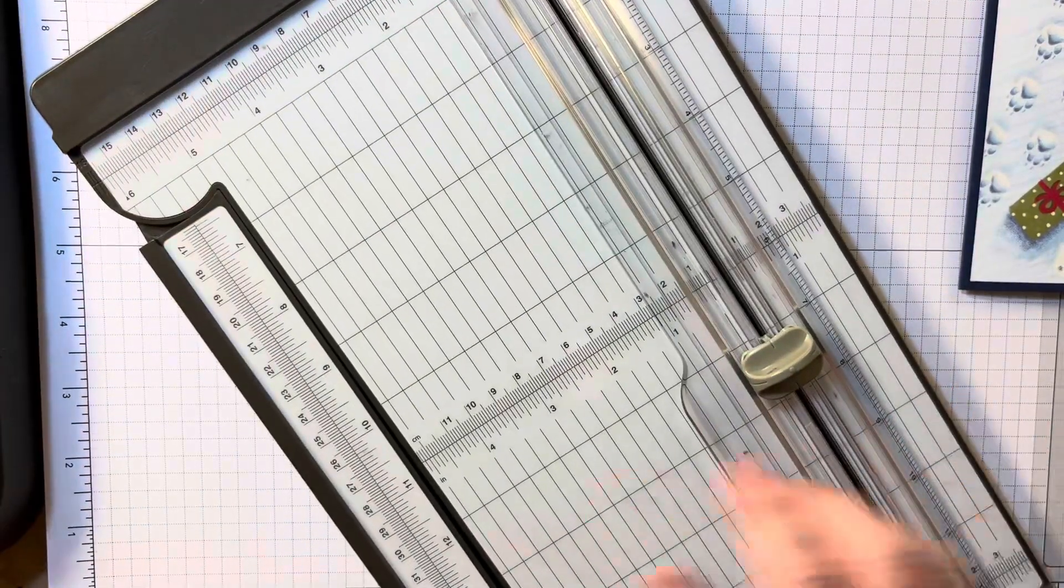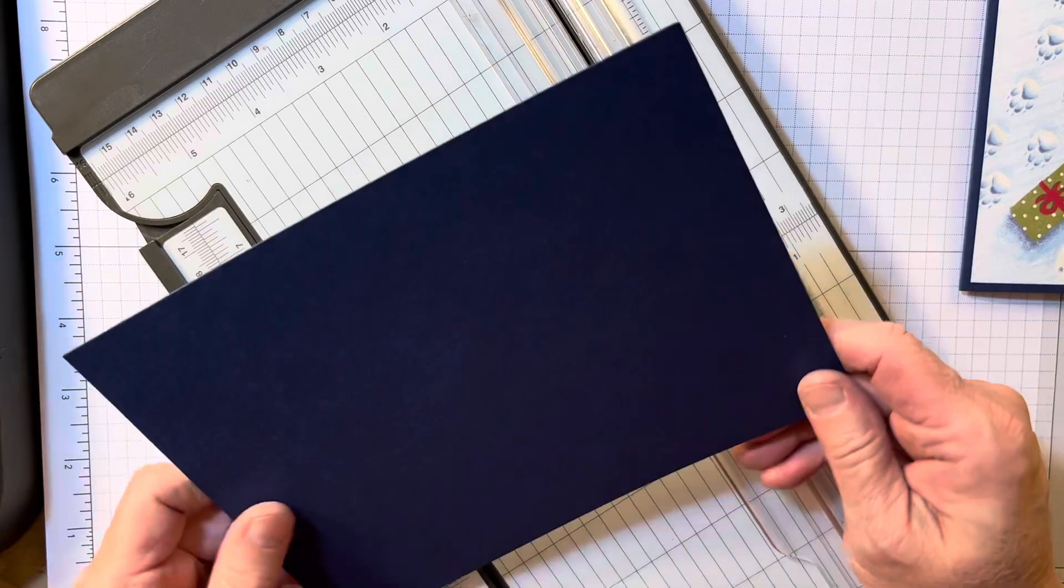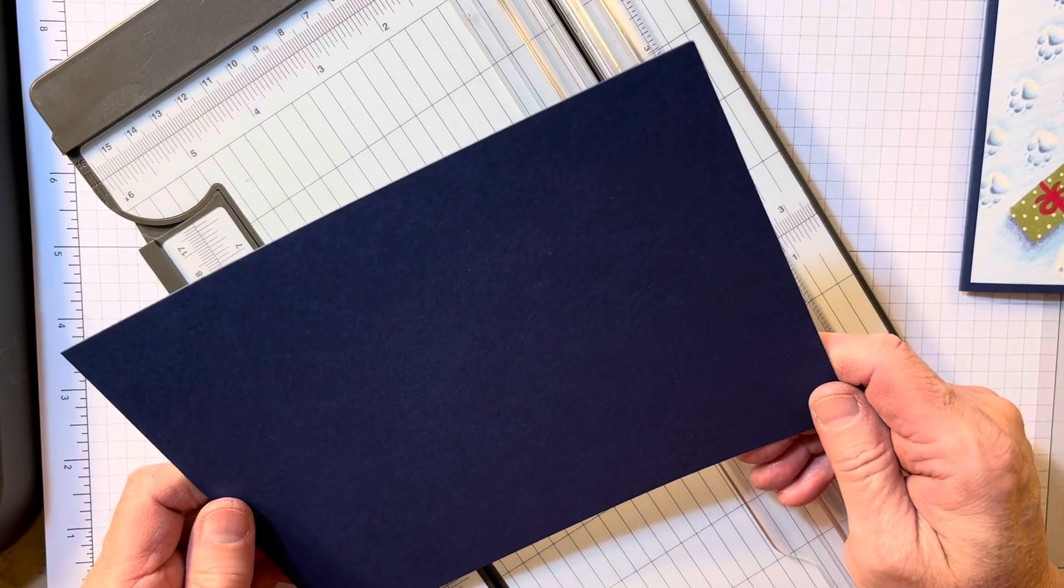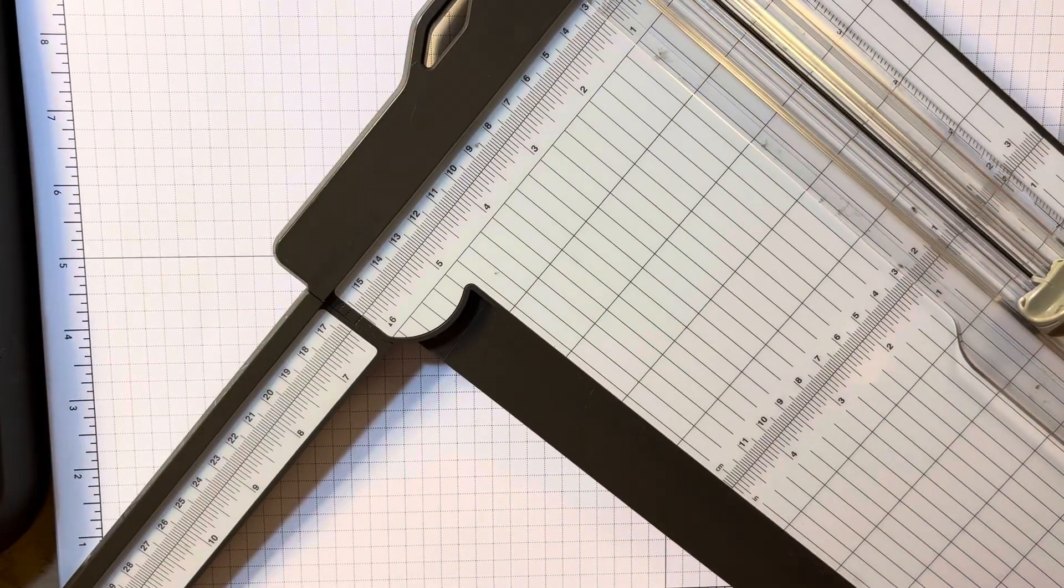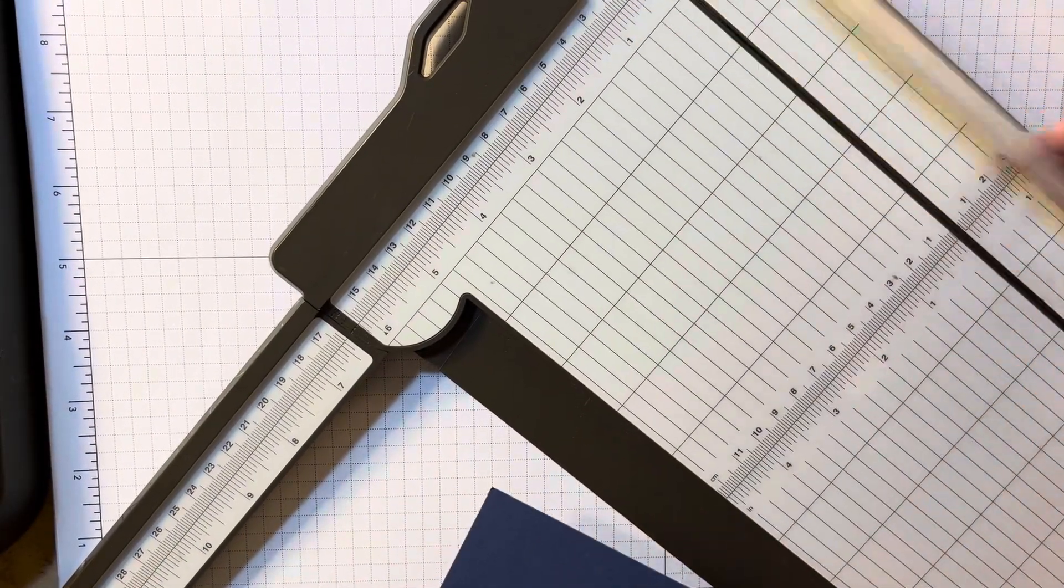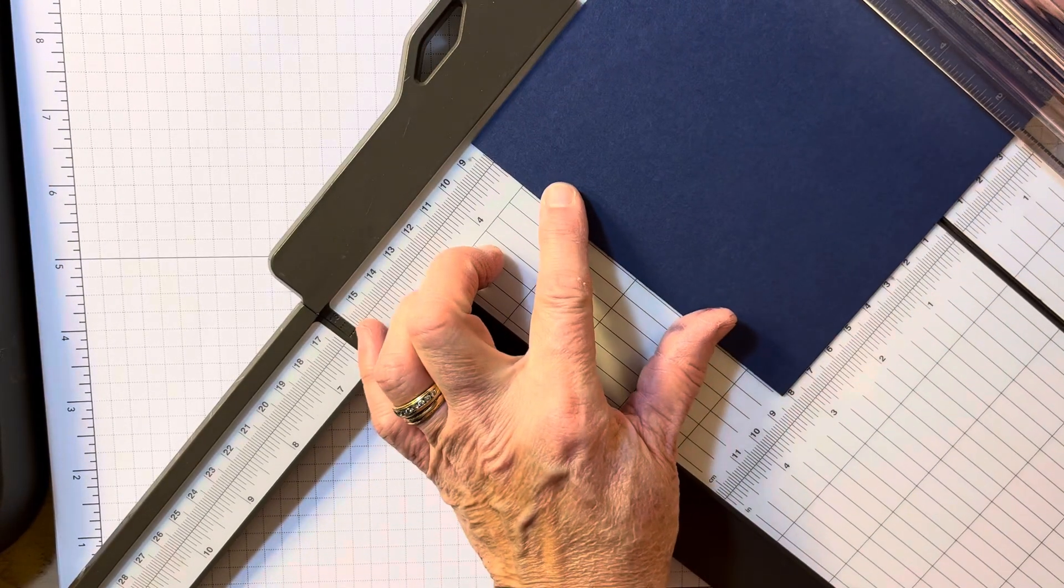So, set that to the side. I'm going to get out a piece of Knight of Navy and it is five and a half by seven and a half. I'm going to open my paper trimmer, move that to the side, and I'll kind of move it as I do it.